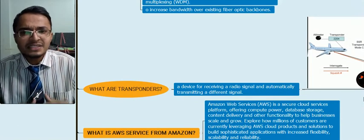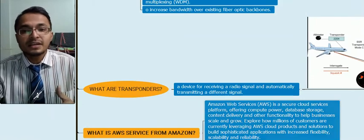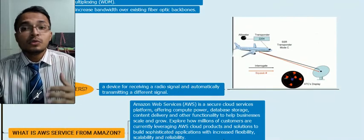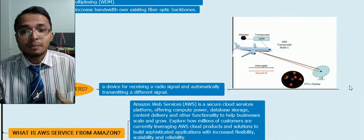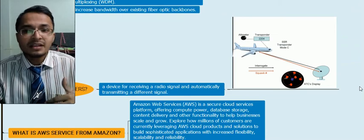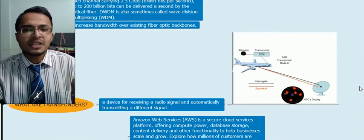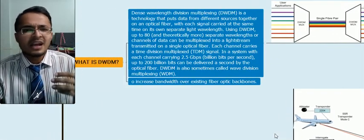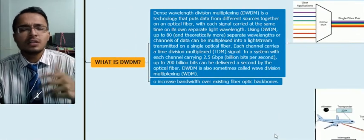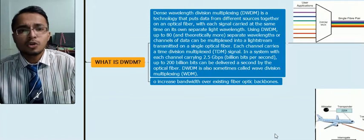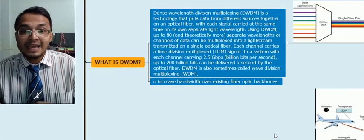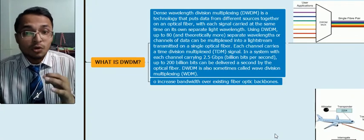What are transponders? Transponders are simple devices that receive signals and automatically transmit different wavelengths of signals. An example: they are fitted on the bottom of a plane, and the Civil Aviation Authority transmits a signal; the transponder transmits back the height of the plane and all that information automatically.